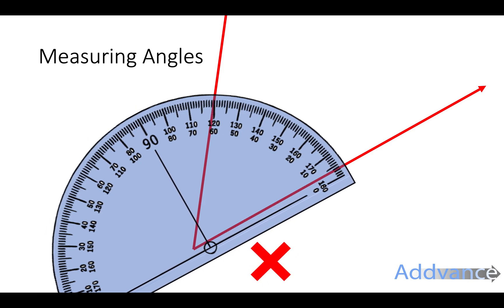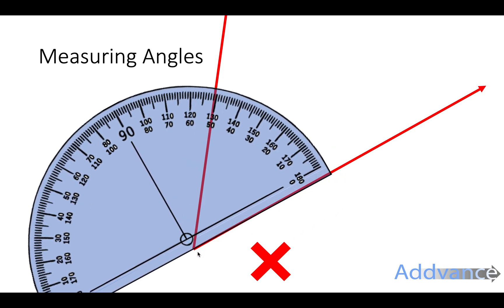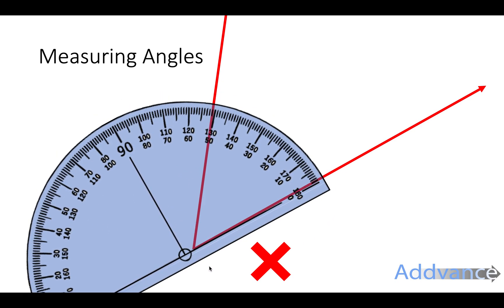You have to be careful it doesn't look like this. The bullseye has to be over the point of the angle. Not like this. It has to be the bullseye and not like this. Again the bullseye has to be directly over the angle.